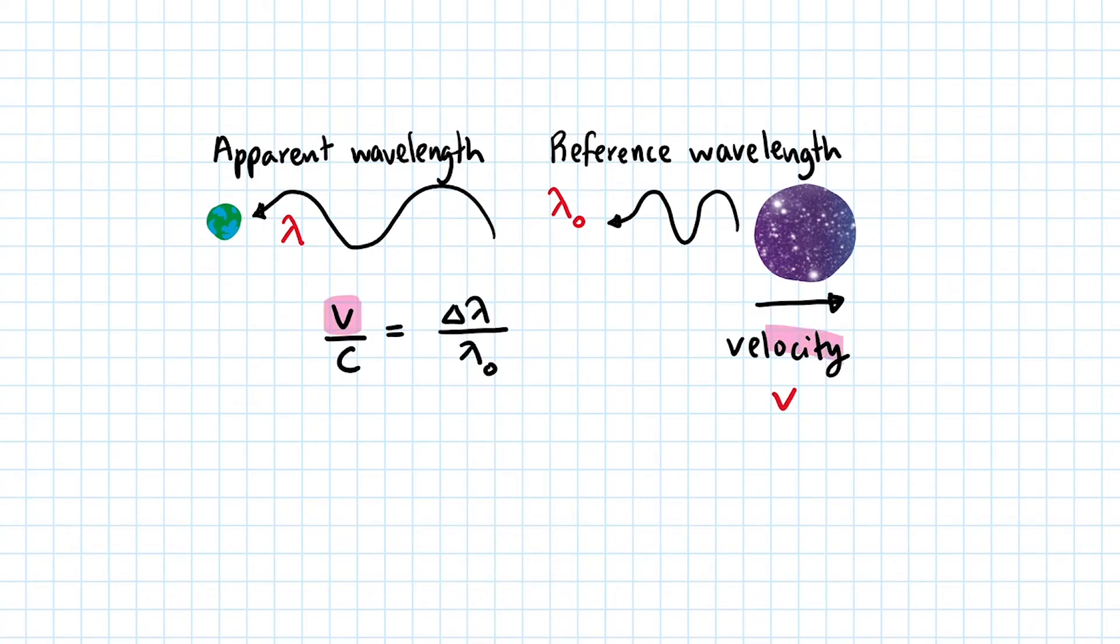This is the star's or the galaxy's velocity. Similarly, c is the speed of light in a vacuum, it's always a constant 3 times 10 to the power of 8 meters per second.